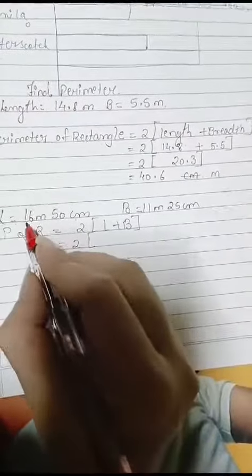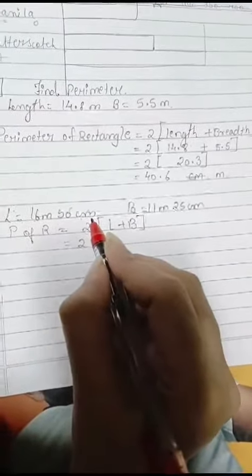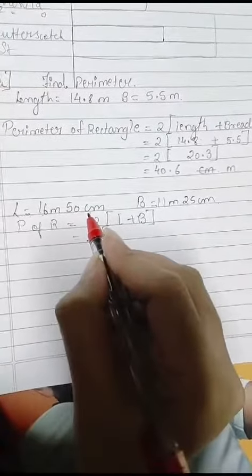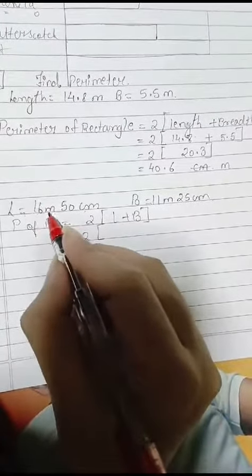What is length? 16 meter 50 centimeter. Now here 2 units are given, so we have to convert the meter into centimeter.